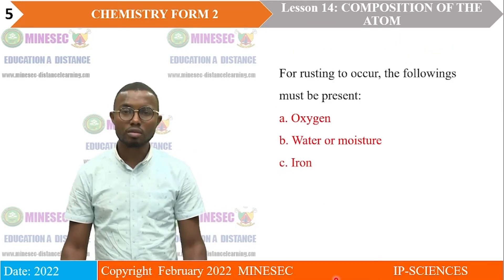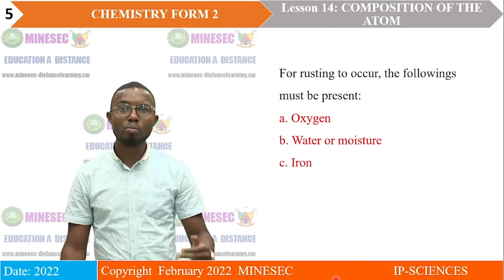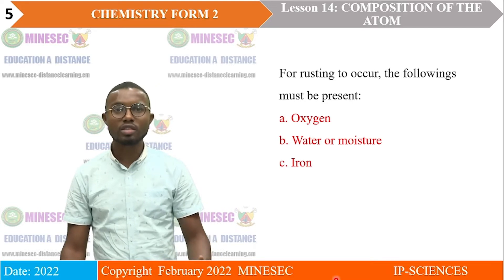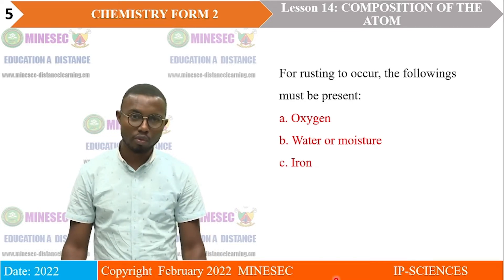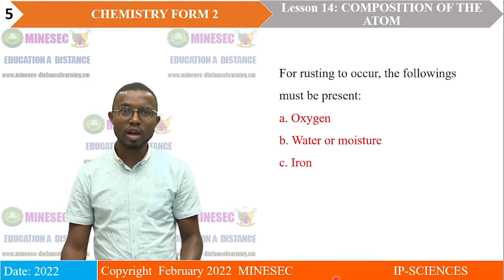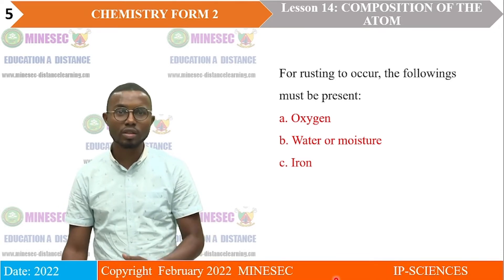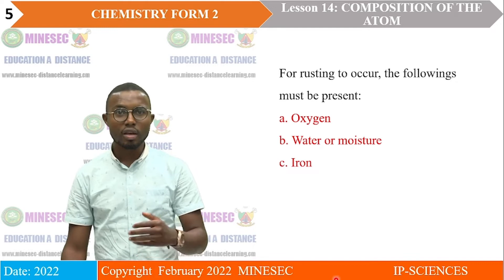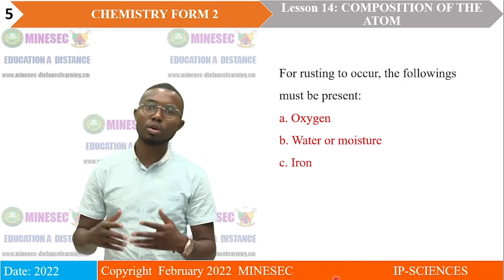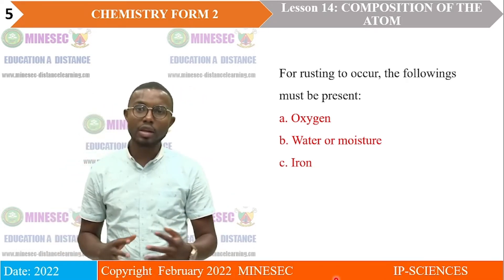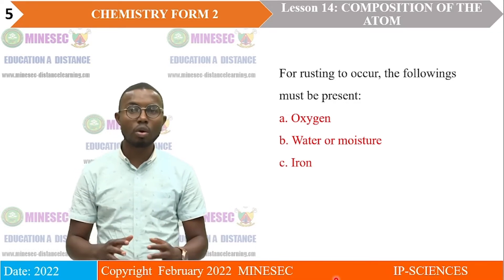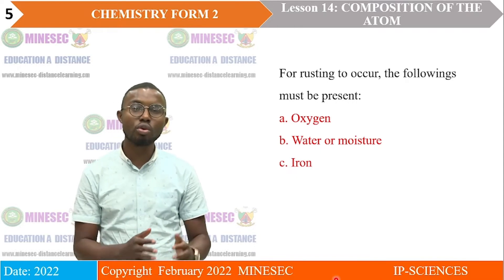For rusting to occur, the following must be present: iron, oxygen, and water or moisture. However, if one of these conditions is not present, rusting will not occur. For example, if you have oxygen and water but iron is not present, no rusting. If there is iron and water but no oxygen, rusting also cannot occur. We saw an experiment in the previous lesson to demonstrate the conditions necessary for rusting.